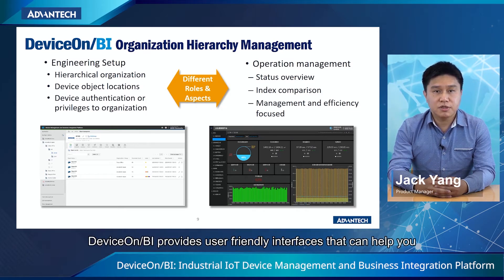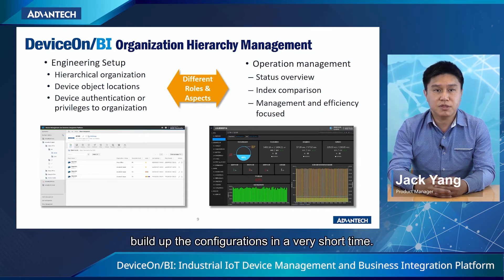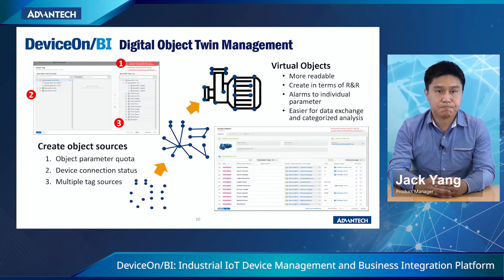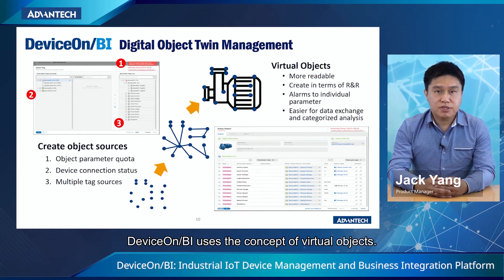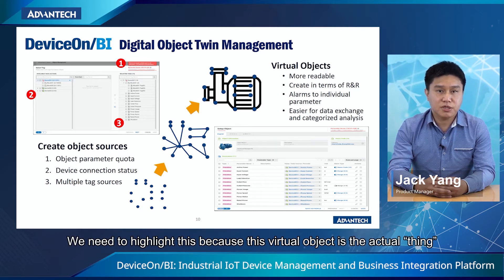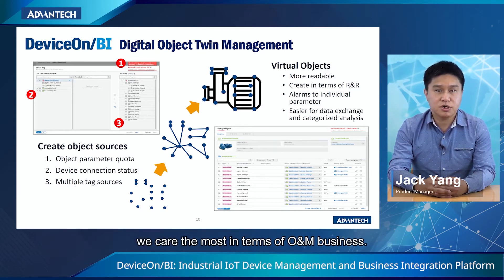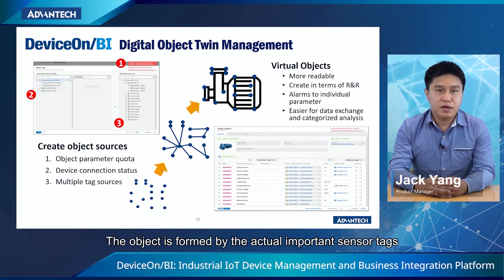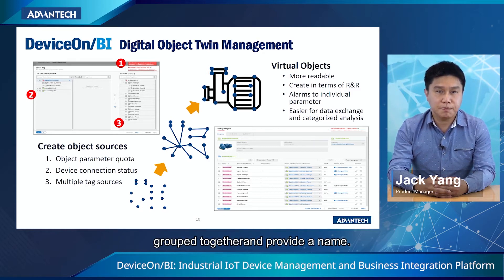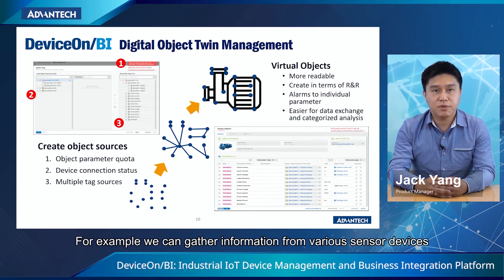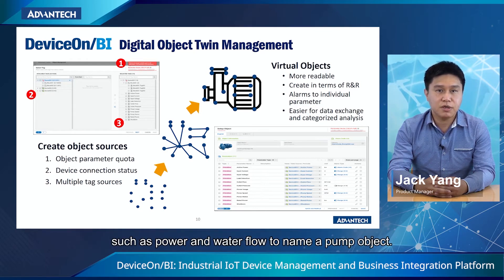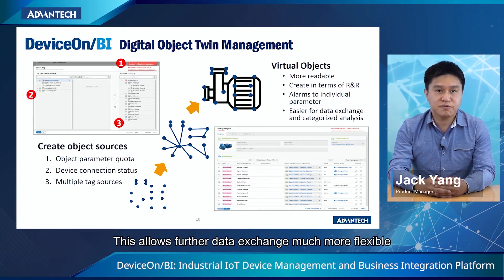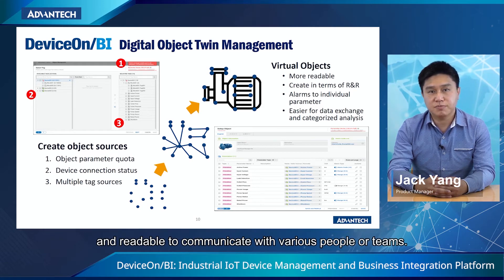DeviceOnBI uses the concept of virtual objects. We need to highlight this because the virtual object is the actual thing we care about most in terms of O&M business. The object is formed by grouping actual important sensor tags together and providing a name. For example, we can gather information from various sensor devices such as power and water flow to define a pump object. This allows further data exchange to be much more flexible and readable when communicating with various people or teams.